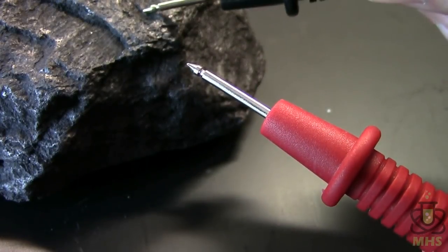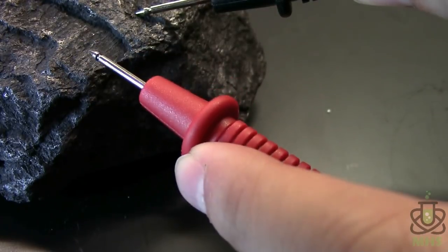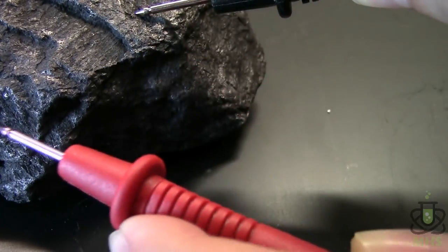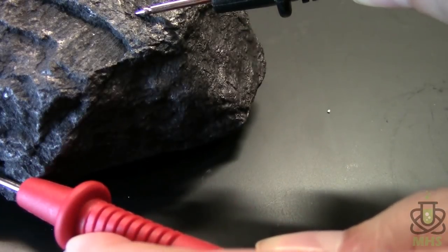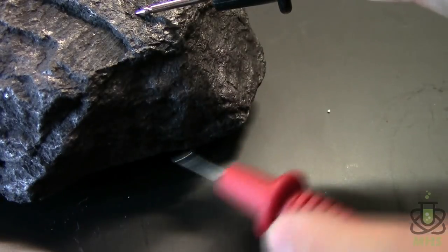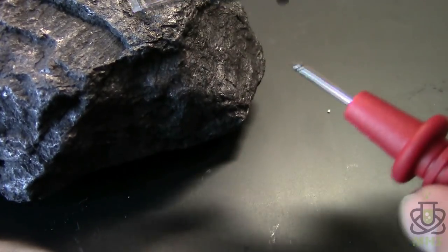If I touch one to this piece of graphite and then touch the other one somewhere else, we get conduction. And I can go pretty much anywhere on this hunk of graphite, and it's conductive. So that's pretty cool.